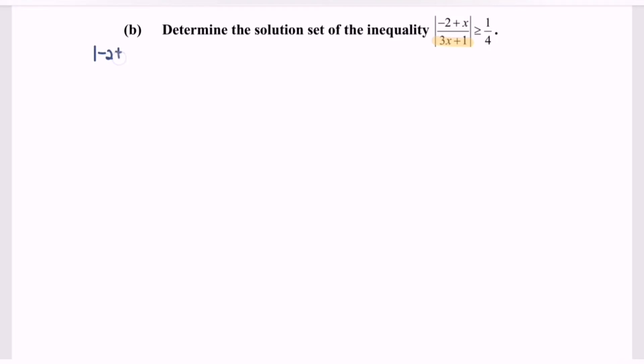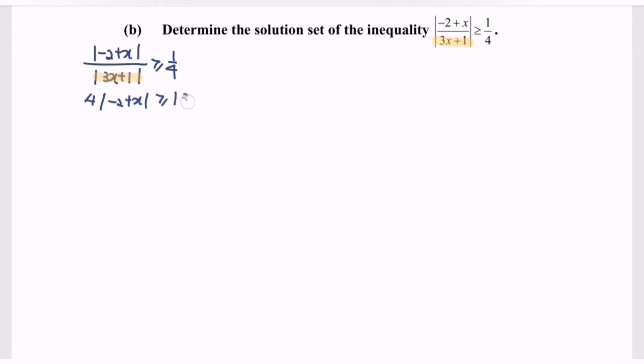Referring to the question, my idea would be to cross-multiply. The reason is that the denominator is always positive. So where we have the modulus of (-2 + x) over the modulus of (3x + 1) greater than or equal to 1 over 4. We note that the denominator is always positive, so we are allowed to cross-multiply. We will then have 4 multiplied with the absolute value of (-2 + x) greater than or equal to the absolute value of (3x + 1).